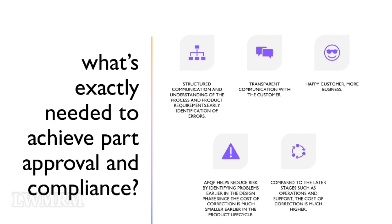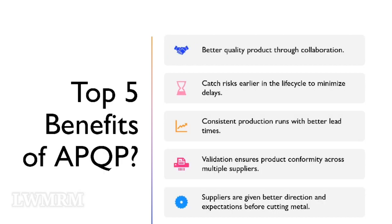APQP helps reduce risk by identifying problems earlier in the design phase, since the cost of correction is much smaller earlier in the product lifecycle. Compared to the later stages such as operations and support, the cost of correction is much higher. Top 5 benefits of APQP: better quality product through collaboration; catch risks earlier in the lifecycle to minimize delays; consistent production runs with better lead times; validation ensures product conformity across multiple suppliers; and suppliers are given better direction and expectations before cutting metal.